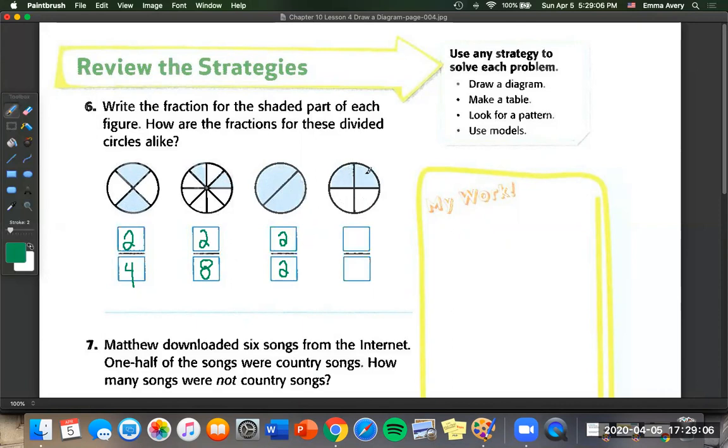And here we've got one, two, three, four pieces. With two colored in. So that's going to be two over four. And what's the same about all of these? There's a two in the numerator.